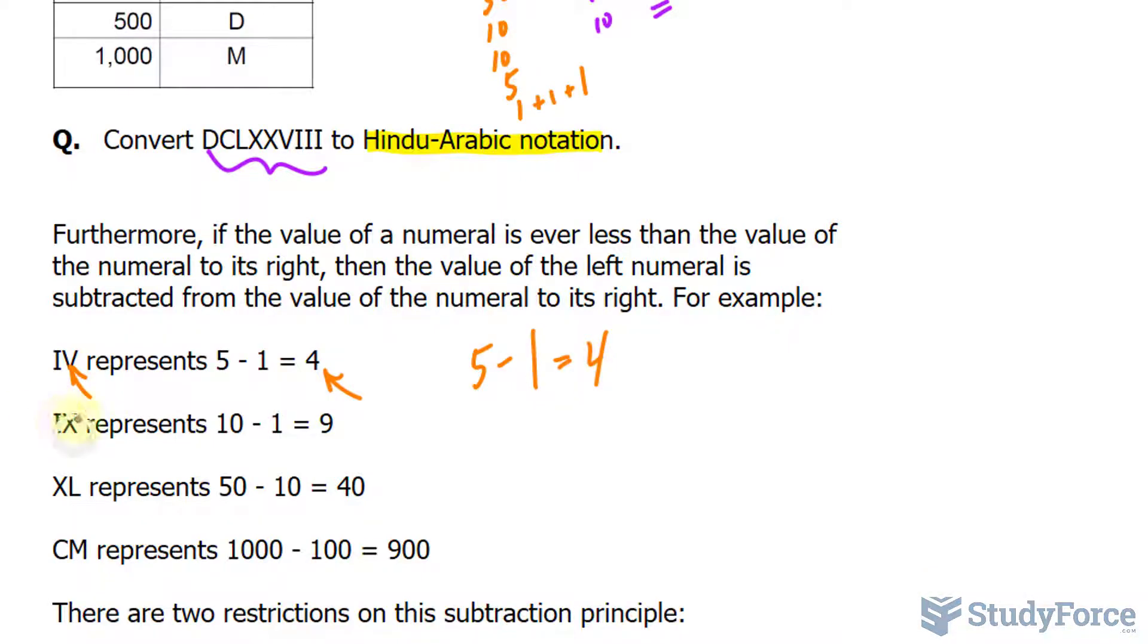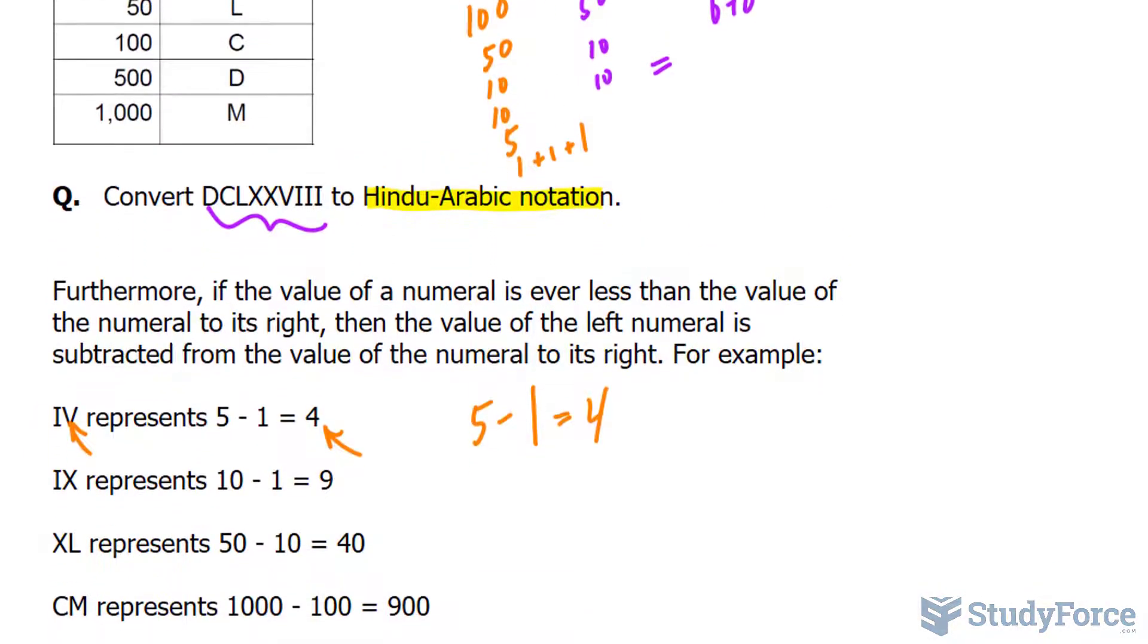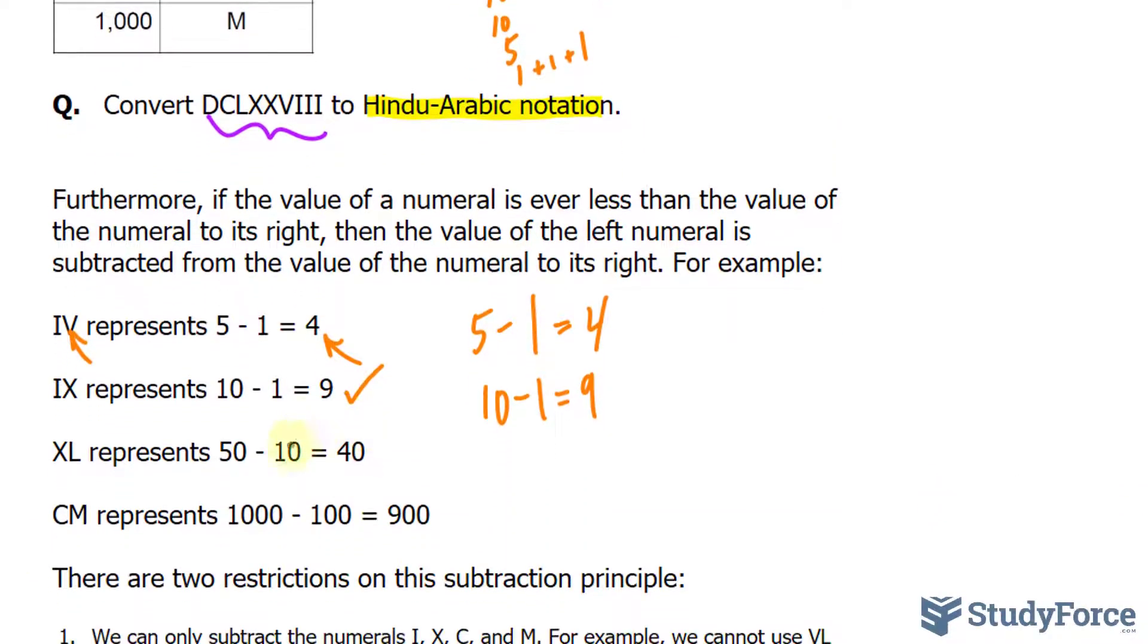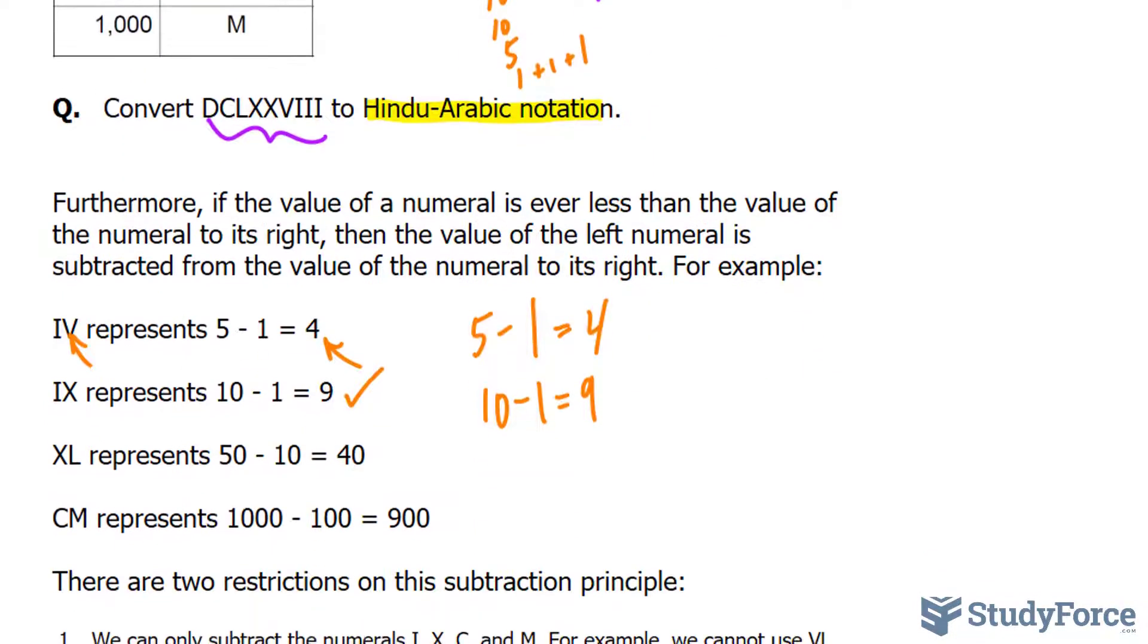The same can be said for the example below. We have IX. X represents 10. It's bigger than I. So we write down 10 minus 1, and that's 9. XL. X is 10 and L is 50. That's like saying 50 minus 10. CM. C is 100, and to its right is M, it's 1,000. So subtracting 100 from 1,000 gives you 900.